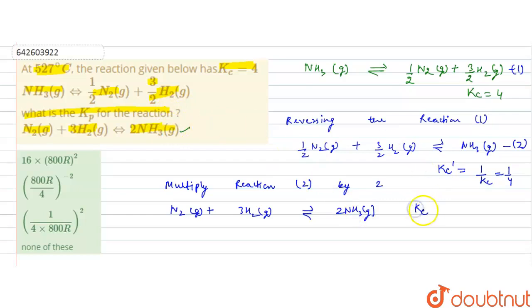So Kc for this reaction, if we let it as Kc double dash, it would be Kc dash square.